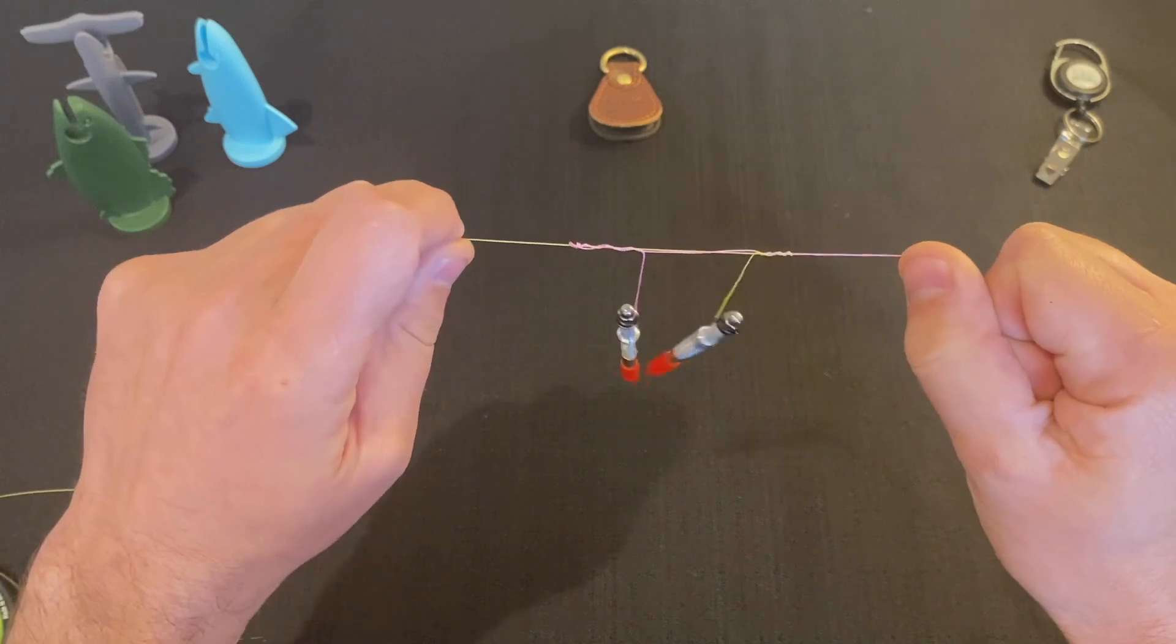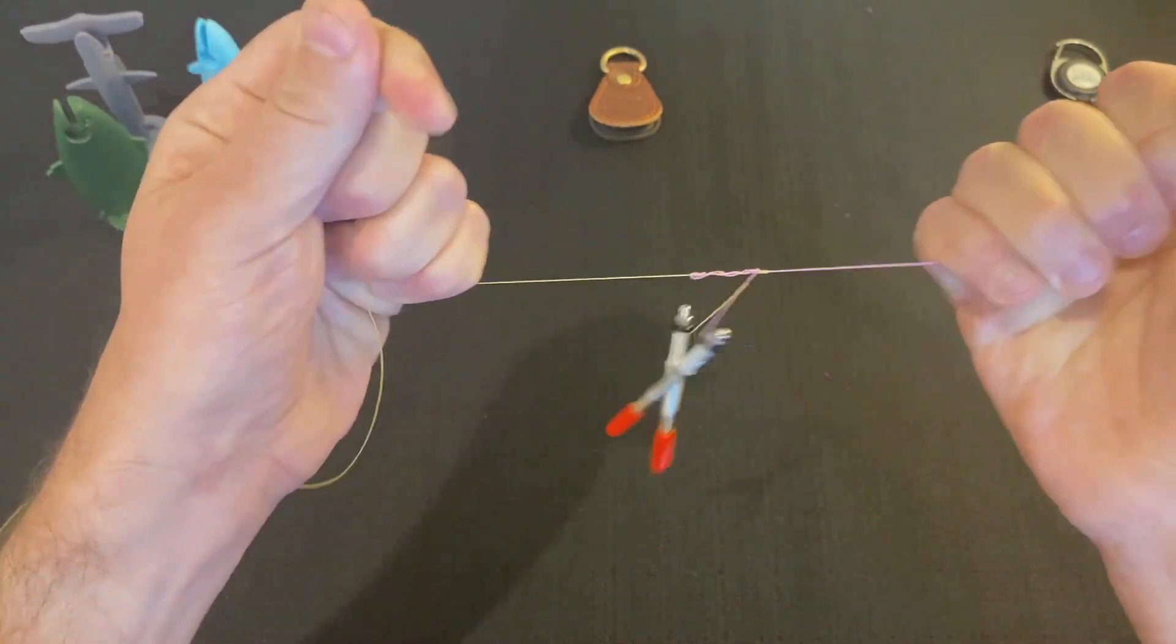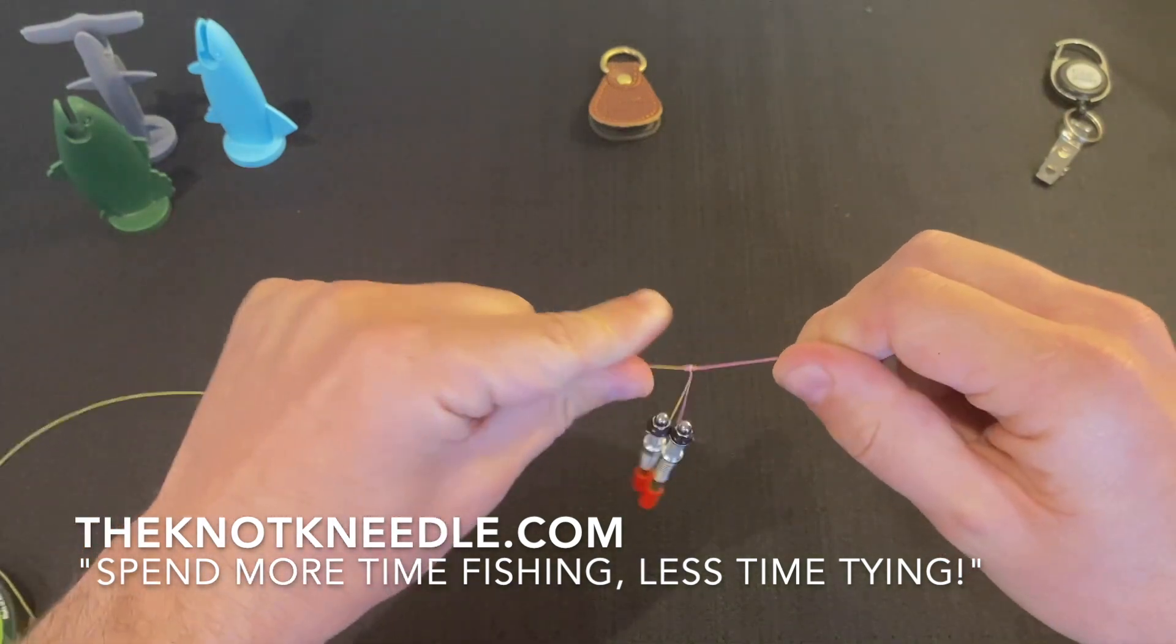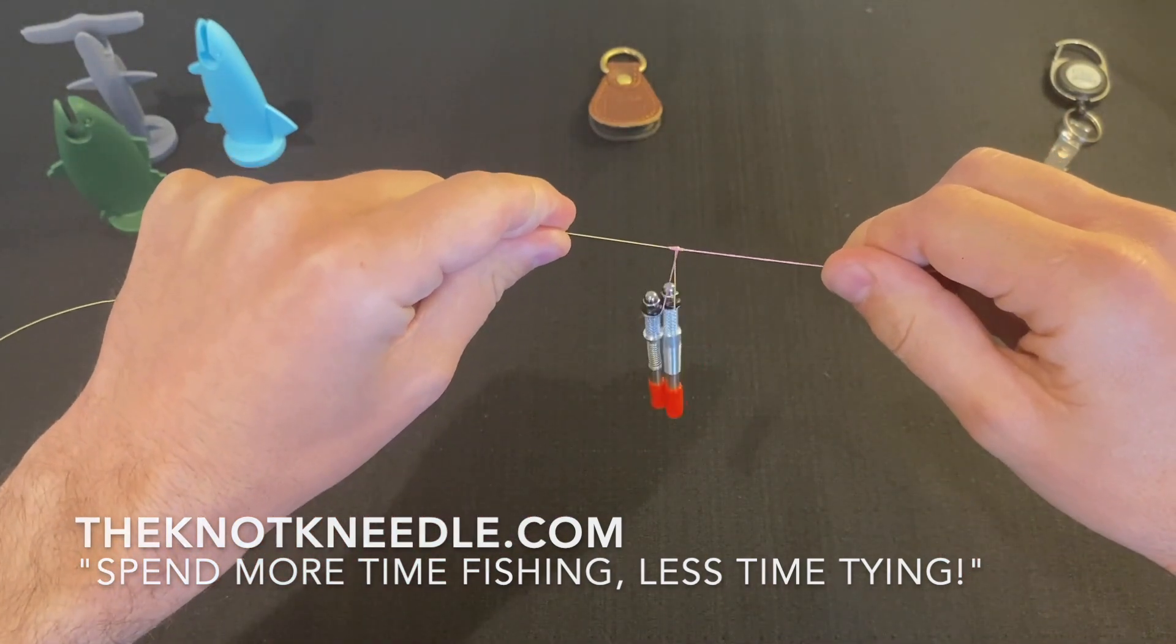And here's where I'm going to wet my line and then cinch it down. And there's the blood knot using two knot needles.